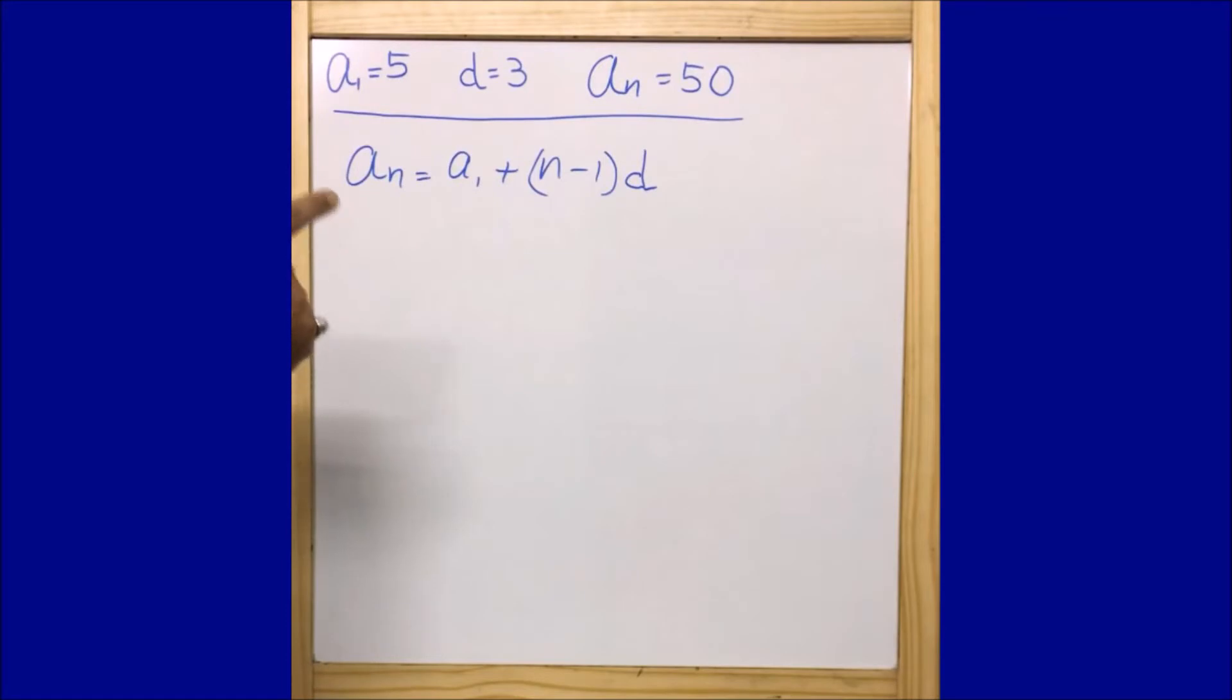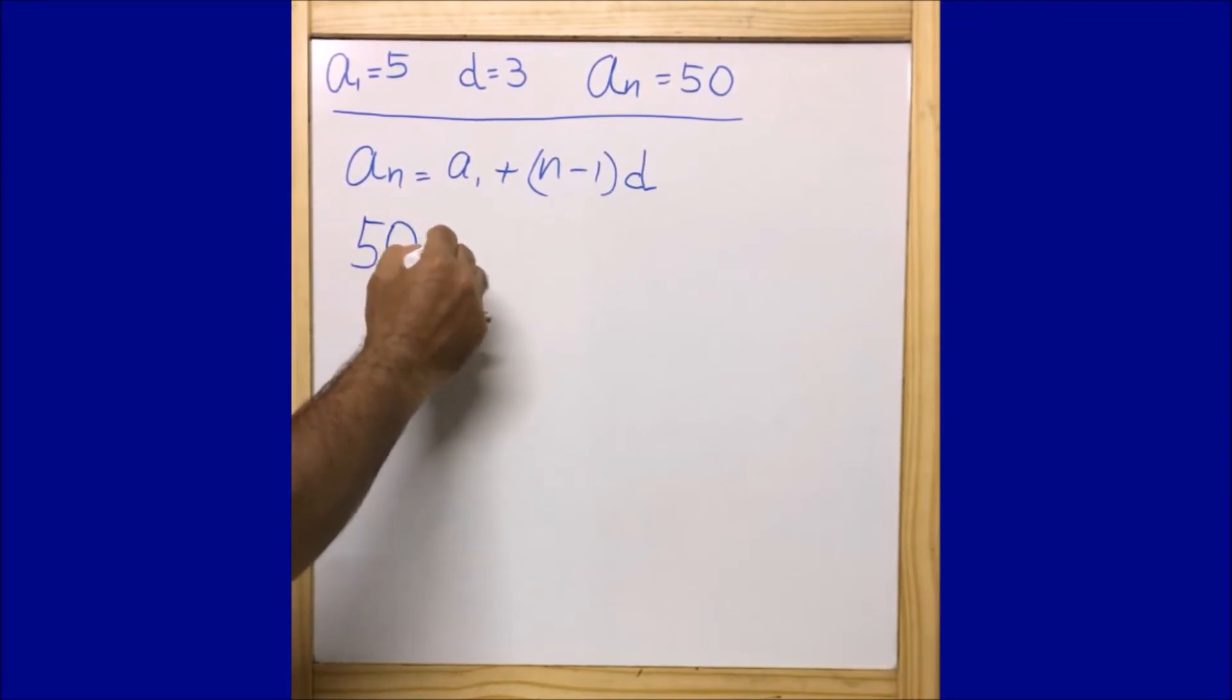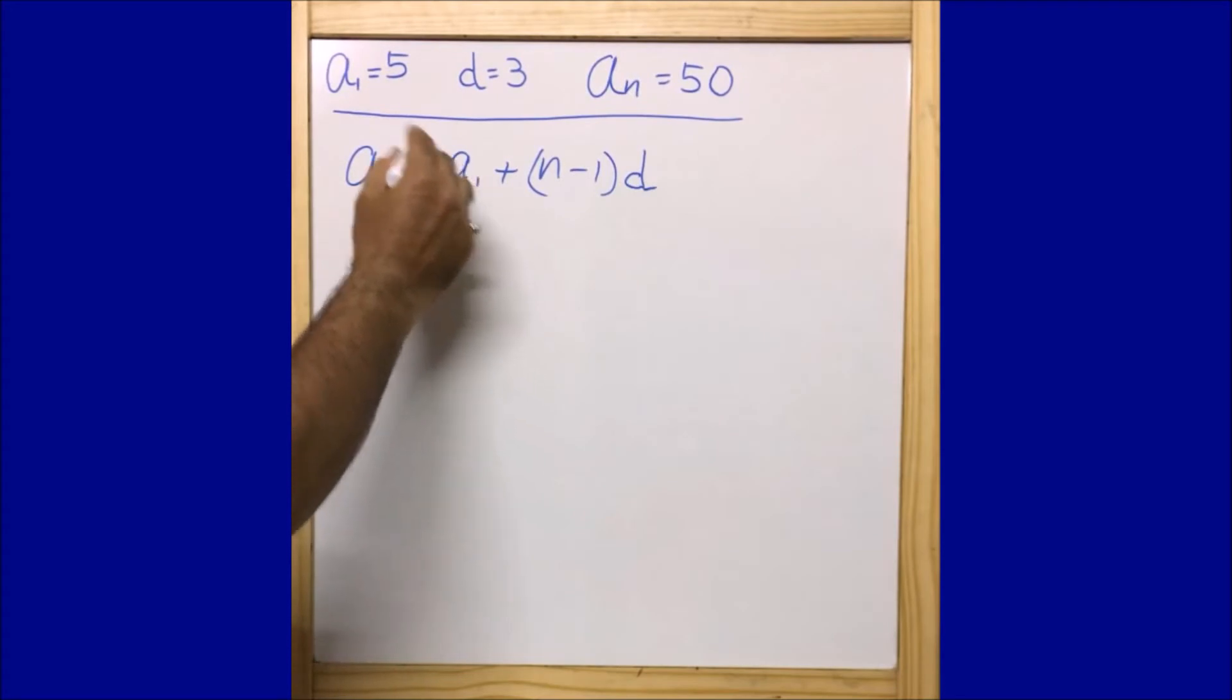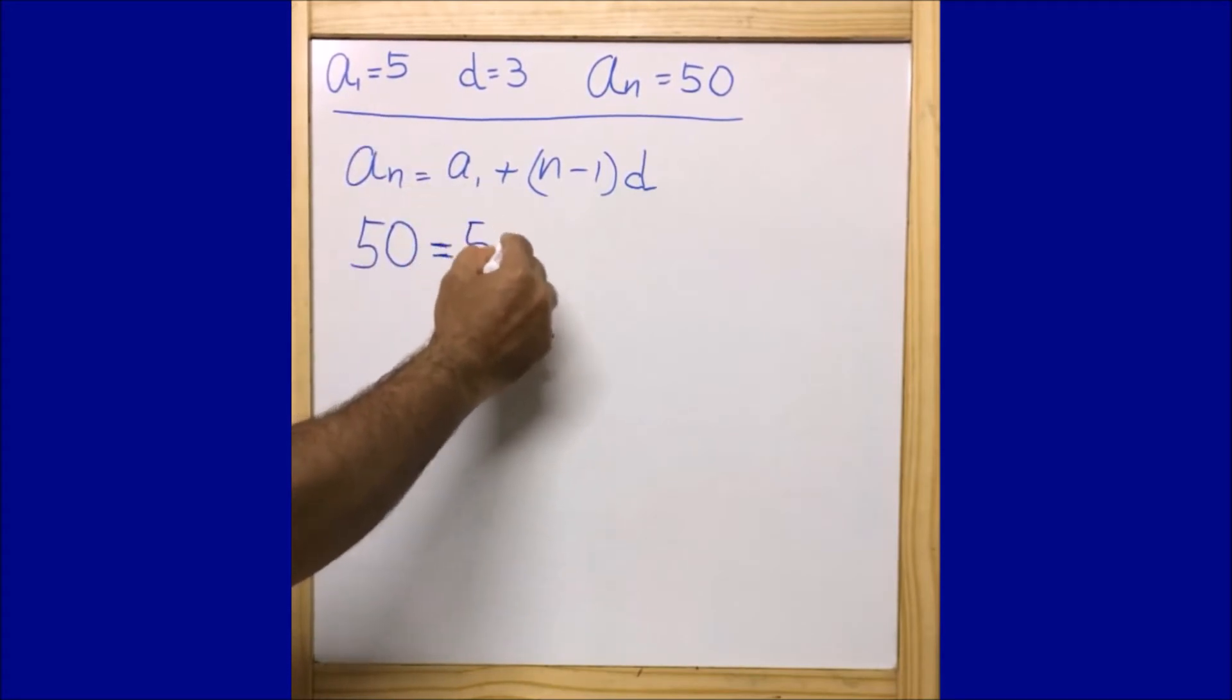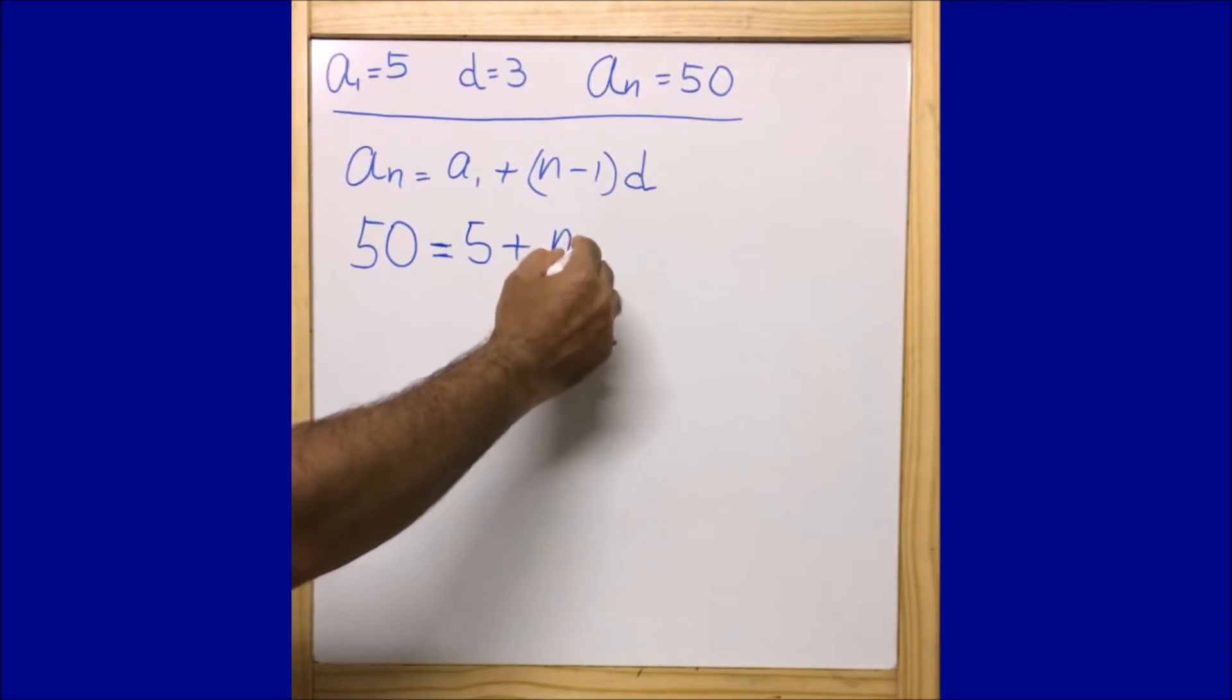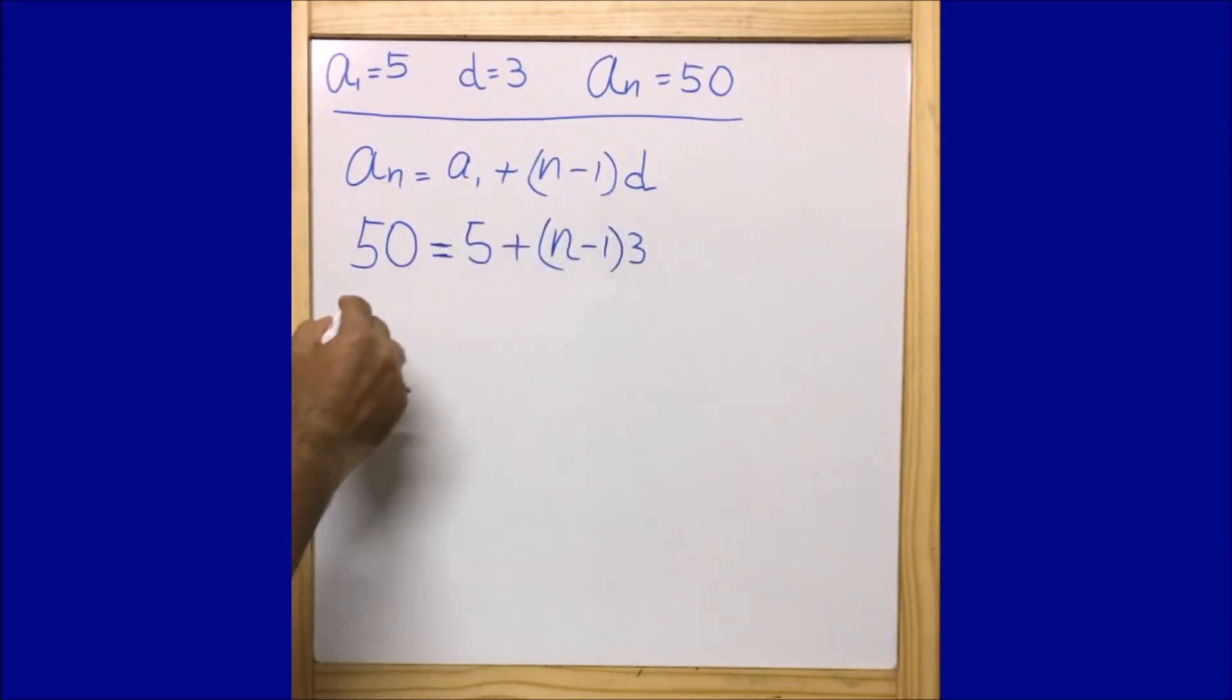Now let us put the values that we have in this formula to find out the value of n. Putting the values: aₙ is 50, that equals a₁ which is 5, plus (n minus 1) times d where d is 3.